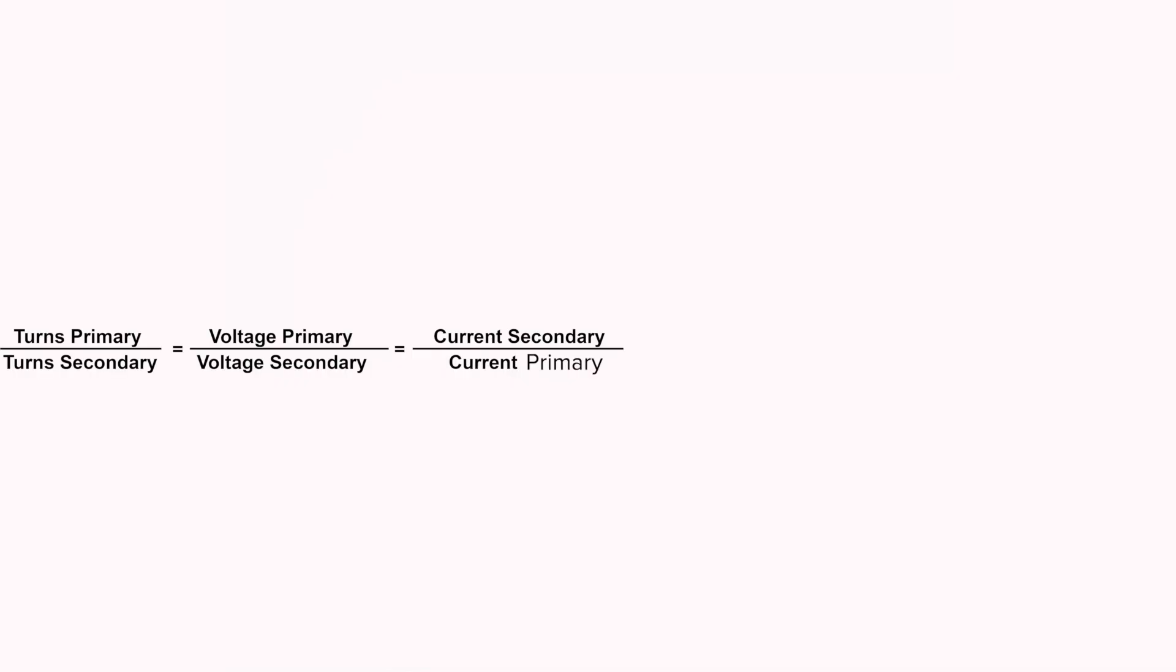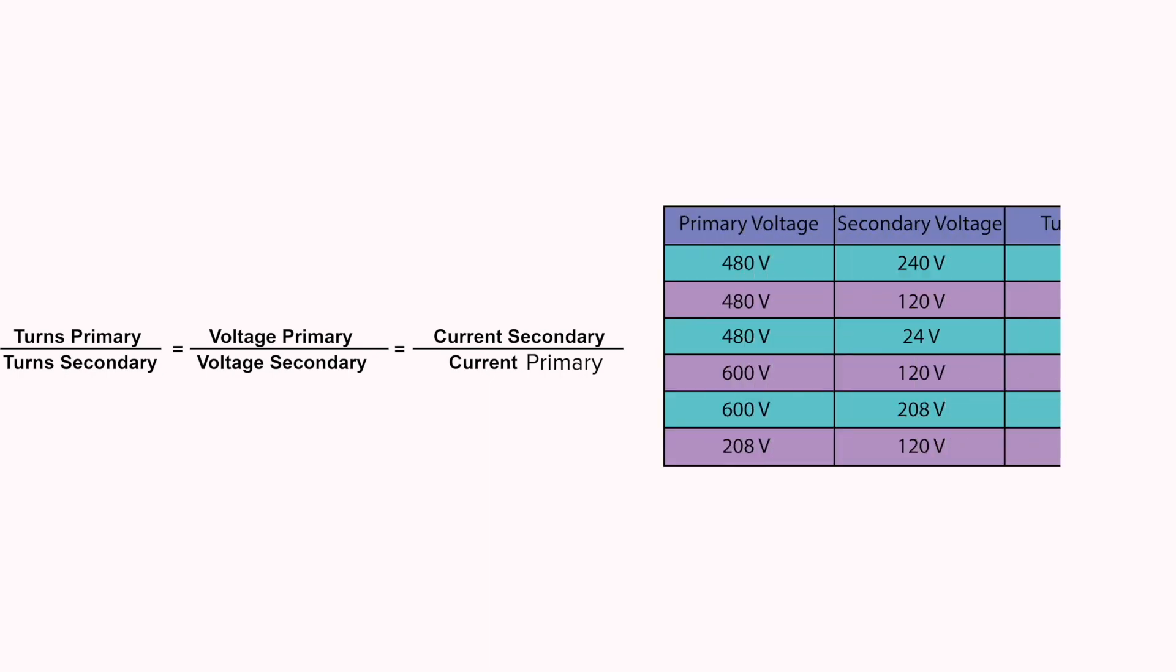The voltage ratio of an ideal transformer, one with no losses, is directly related to the turns ratio, while the current ratio is inversely related to the turns ratio. Here is a table with some common single-phase transformer turns ratios based on primary and secondary voltage ratings.